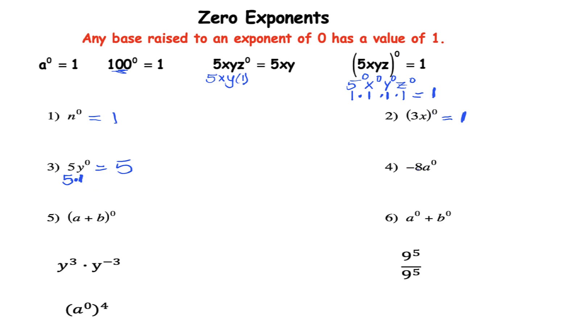Number 4 I have negative 8a to the zero. Again pay attention to who is raised to zero. The a so that has a value of 1. You're going to multiply by the negative 8. Negative 8 times 1 so your answer is negative 8.